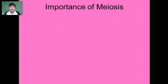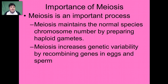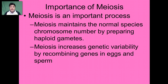Meiosis is an important process because it maintains the species' chromosome number from generation to generation by allowing for the preparation of haploid gametes. It's also important because it increases genetic variation in sexually reproducing organisms by allowing for crossing over and independent assortment to create new combinations of genes in eggs and sperm, so offspring have a wide variety of genetic characteristics. Soon we'll be examining the probability of inheriting these various combinations of genes as we further explore genetics.